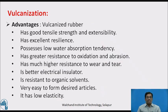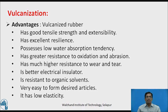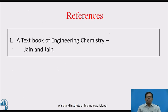Advantages of vulcanized rubber: it has good tensile strength and extensibility, excellent resilience, low water absorption tendency, greater resistance to oxidation and abrasion, much higher resistance to wear and tear, better electrical insulation, resistance to organic solvents, and it is very easy to form desired articles from it.